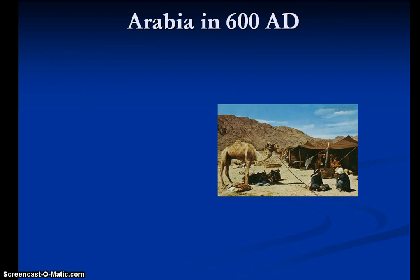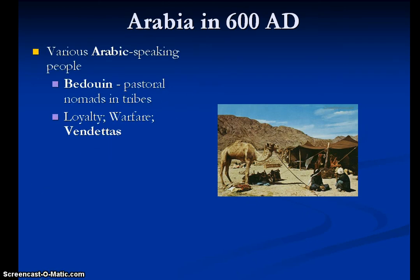About 600 AD, when Islam is getting its start, we had already seen the development of the Arabic language. These are various different groups — it was not a united, single ethnic group with one single history or heritage. But you did start to see the importance of the Arabic language. They are largely comprised of what we call Bedouin groups — pastoral nomads in various tribes. Saudi Arabia is right next to major trade routes — not just local, but major continental trade routes. They're in close proximity to them, but not directly part of them.